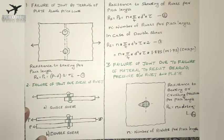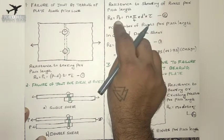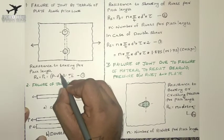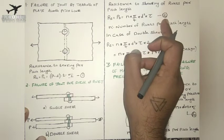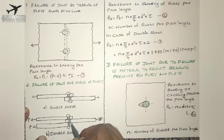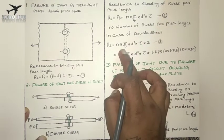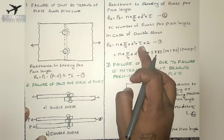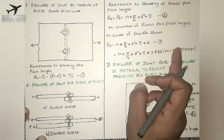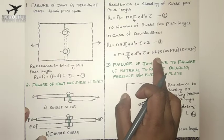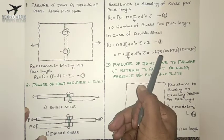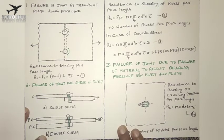For double shear, we multiply the single shear equation by 2 because we have two shear planes, giving N times (pi/4 times D squared) times tau times 2. However, for design purposes we do not multiply by 2 — instead we multiply by 1.875 or 1.75 depending on the designer. Mostly in mechanical design, 1.875 is used.